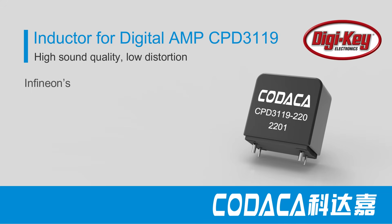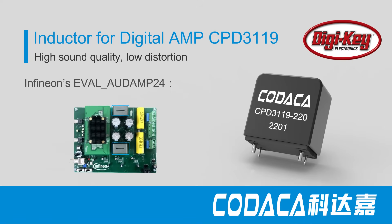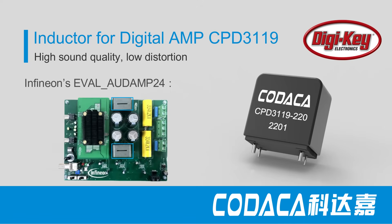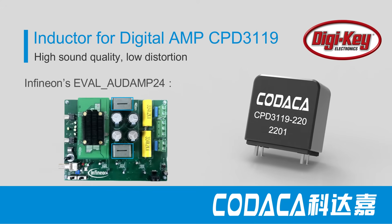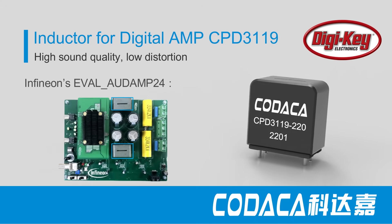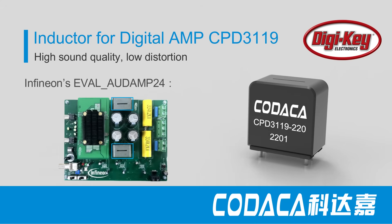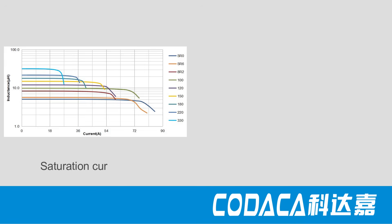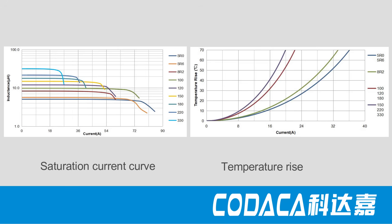The CPD-3119 Series Digital Power Amplifier Inductors have been applied for Infineon's Eval Underline Audamp 2-4 Evaluation Board. The series is RoHS and reach-compliant and halogen-free. Performance data includes a saturation current curve and a temperature rise current curve.